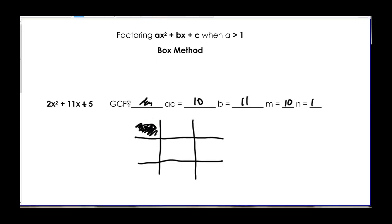You put your first term in this box and your last term in this box, and then you put your M and N in these boxes. So what does that look like?